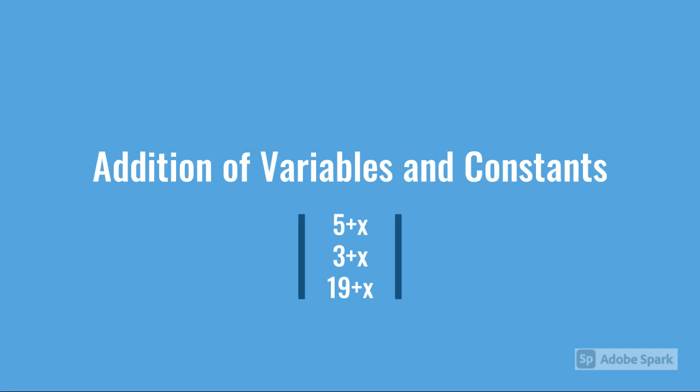But the answer of these won't be 5x, 3x or 19x. It doesn't work like that. These can't be further simplified. It's going to remain 5 plus x, 3 plus x and 19 plus x.